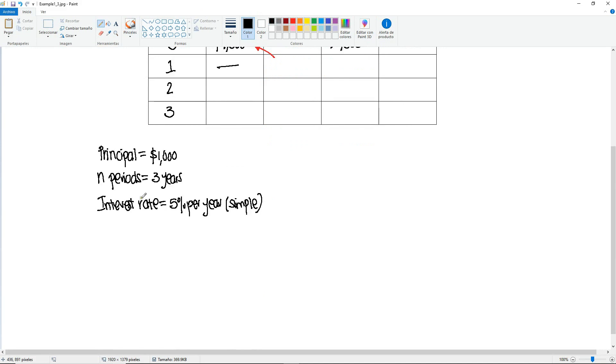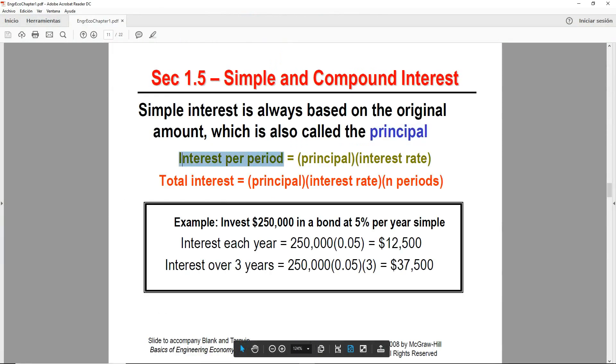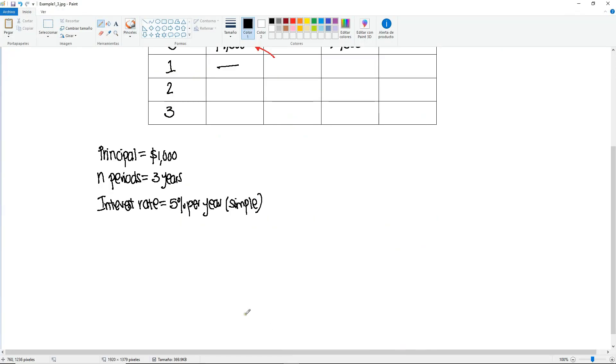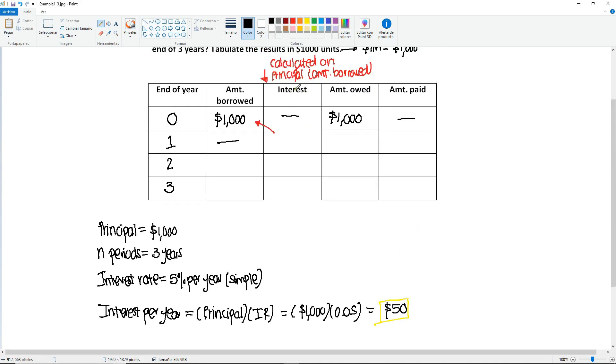So let's go back to the formula. The interest per period, in this case it's going to be the interest per year, that's our period, it's going to be equal to the principal times the interest rate. So we're going to write here interest per year, it's the principal or the original amount, times that interest rate, which is going to be equal to $1,000 times 5%, which is 0.05, and this will give us a total of $50.